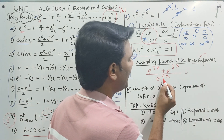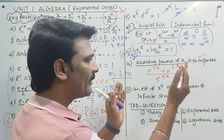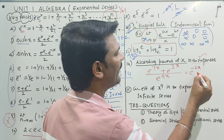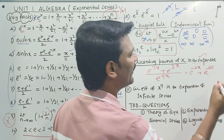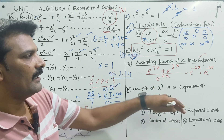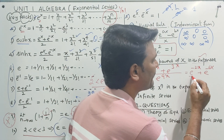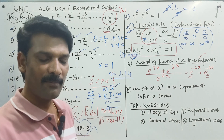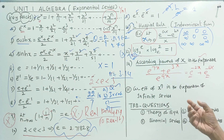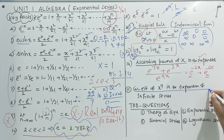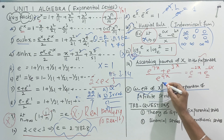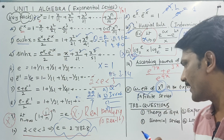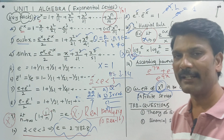We divide it and change it. We divide and split with e power minus 2x, then e power minus 6x. We write the balance of the numerator and expand. This gives the ascending powers of x in the expansion. Next is the coefficient of x power n in the expansion of an infinite series — we find the coefficient of x power n in the format of this model.